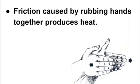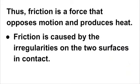Now, an interesting phenomenon related to friction: in winters, when we rub our hands together, our hands get warm. It happens because friction is caused by rubbing your hands together, which produces heat. So we can conclude that friction is a force that opposes motion and produces heat.